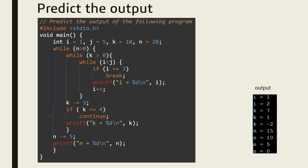The first one, the outer while loop, starts from here to here. The next while loop is from here to here, and the inner while loop is from here to here. The different variables used are: i is equal to 1, j is equal to 5, k is equal to 10, and n is equal to 20.